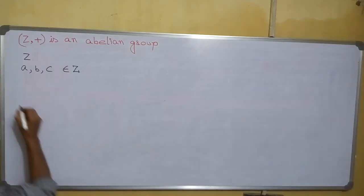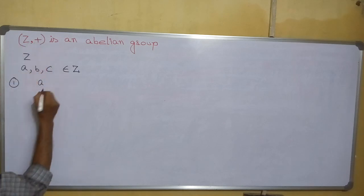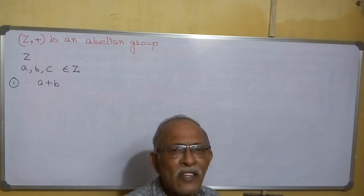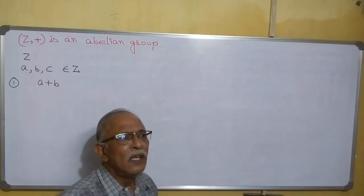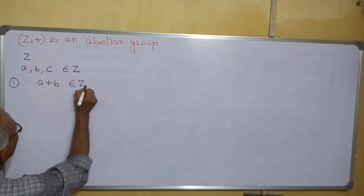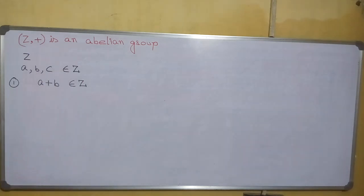See the points — what to prove. First, we have to prove closure. Since this is a class with binary operation A plus B: since A is an integer and B is an integer, the sum A plus B is always an integer. For example, 5 plus 18 is an integer, 13 minus 7 is an integer, 0 plus 5 is an integer. So, the sum of any two integers is an integer. Hence, A plus B belongs to Z. This is true for any two integers belonging to Z.